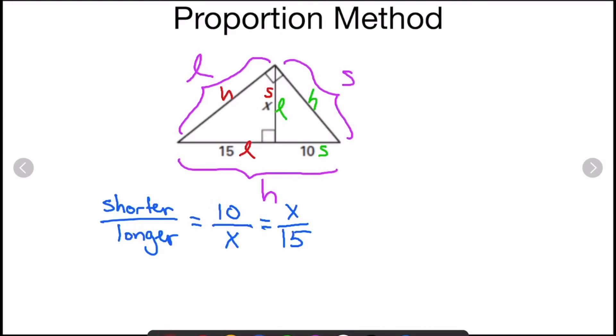I'm using my cross product method. X times X, that's X squared. And the other way, it's 10 times 15, which is 150.